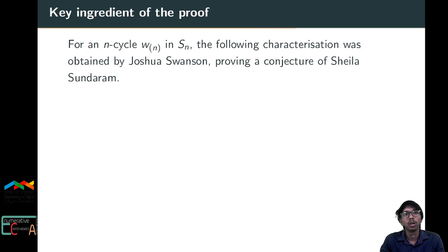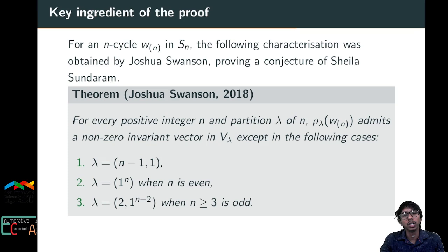For an n-cycle w_n in Sn, the following characterization was obtained by Joshua Swanson, proving a conjecture: for every positive integer n and partition λ of n, ρ^λ(w_n) admits a non-zero invariant vector in V^λ except when λ is the standard or sign representation with n even, or the conjugate of the standard representation with n odd.